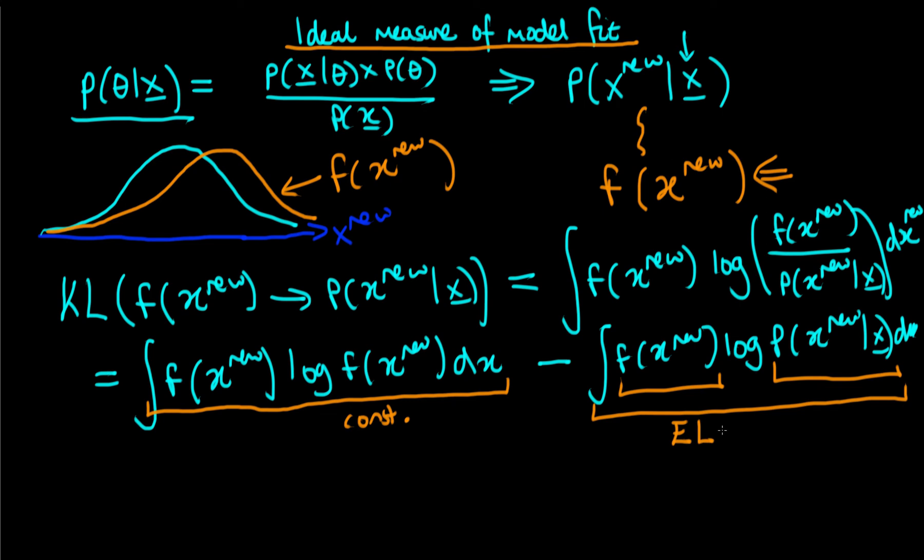And we call this second term here, which we're going to use to evaluate the fit of our model, the expected log predictive density. But essentially, all we do to minimize the Kullback-Leibler divergence is we must maximize the expected log predictive density because we can do nothing about this first term here. So we don't even consider it.